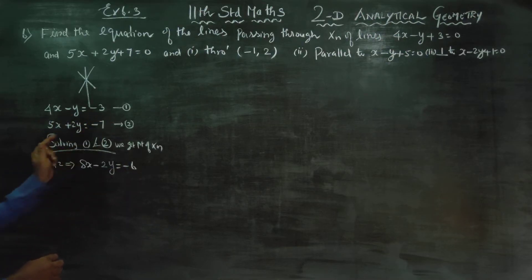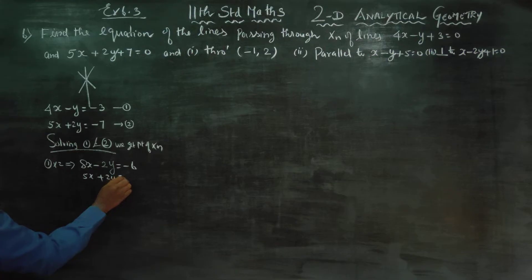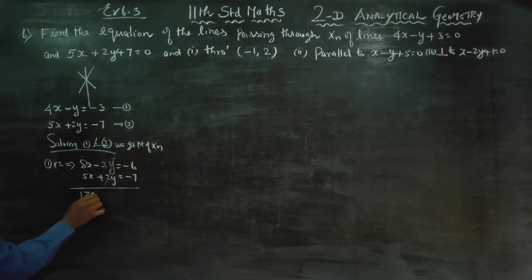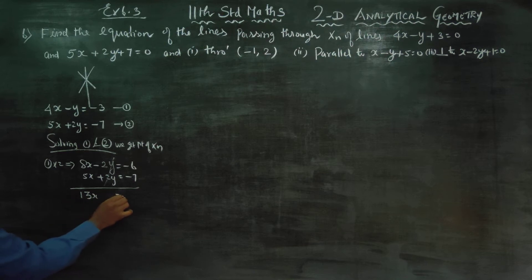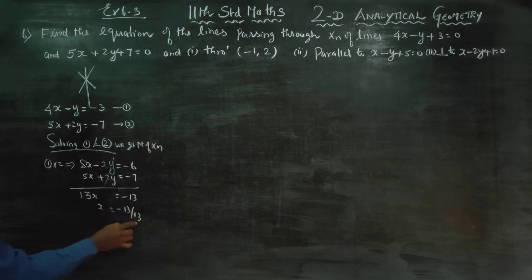For equation 2, multiply: 5x plus 2y is equal to minus 7. If you add, you will get 13x equal to minus 13, so x is equal to minus 13 by 13, which gives x is equal to minus 1.